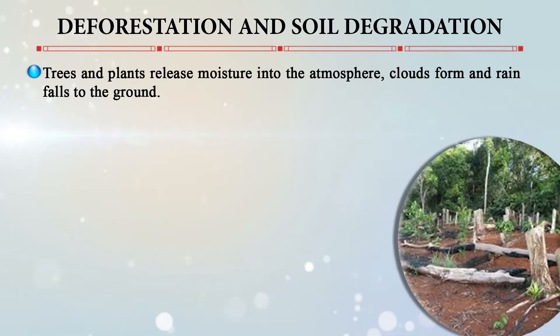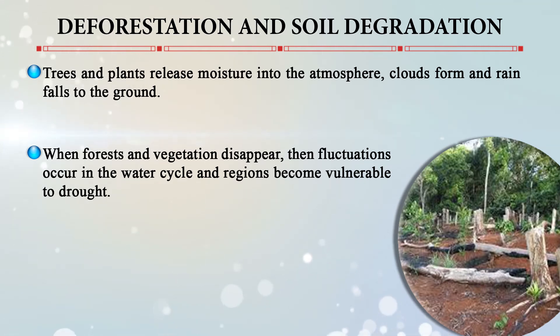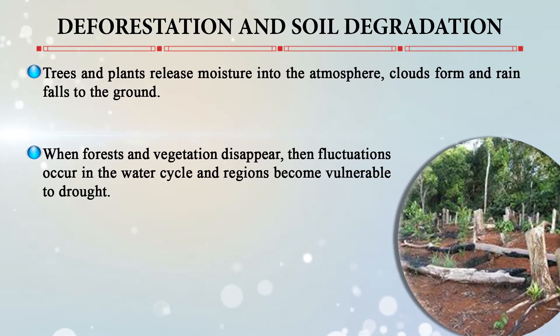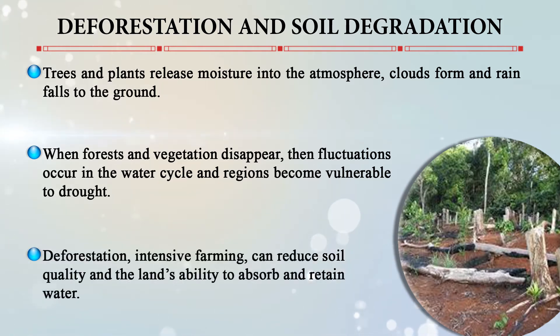Deforestation and soil degradation are also key man-made causes. Trees and plants release moisture into the atmosphere, enabling cloud formation and rainfall. When forests and vegetation disappear from an area, there are fluctuations in the hydrological cycle and regions become vulnerable to drought. Intensive farming reduces soil quality and the land's ability to absorb and retain water. These natural and man-made causes together drive drought conditions.